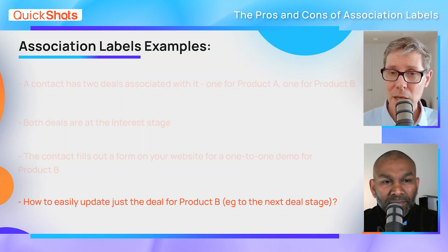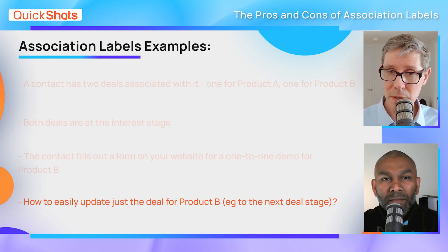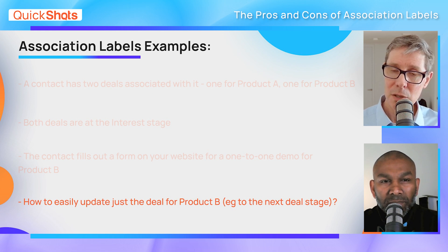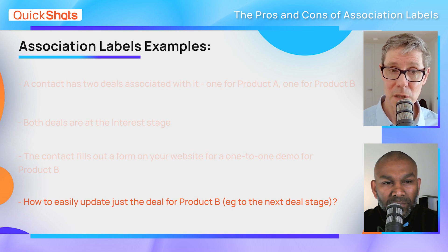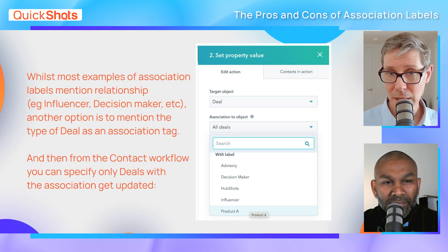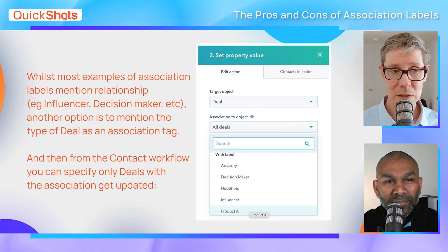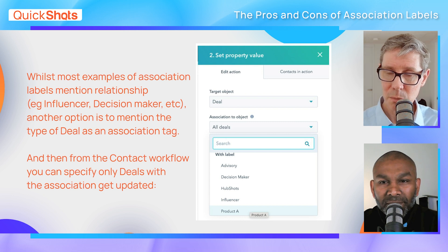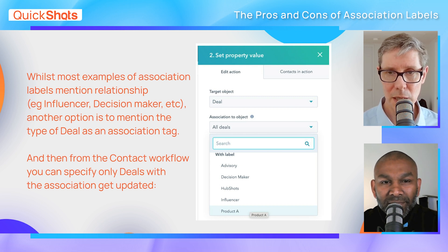How can you automate updating just that one associated deal from the contact form submit? You can't at the moment, because if you try to update associated deals by default, you'd update all of them. But with association labels, you could label deals as 'product A deal' or 'product B deal' and say 'update any deals with an association label of product B.' There's an example in the show notes about how to selectively update deals against a contact based on association labels - you'll see something like this in your workflow. This is increasingly the problem: how do I use a workflow to update just a few deals, not all of them? Association labels are the answer.